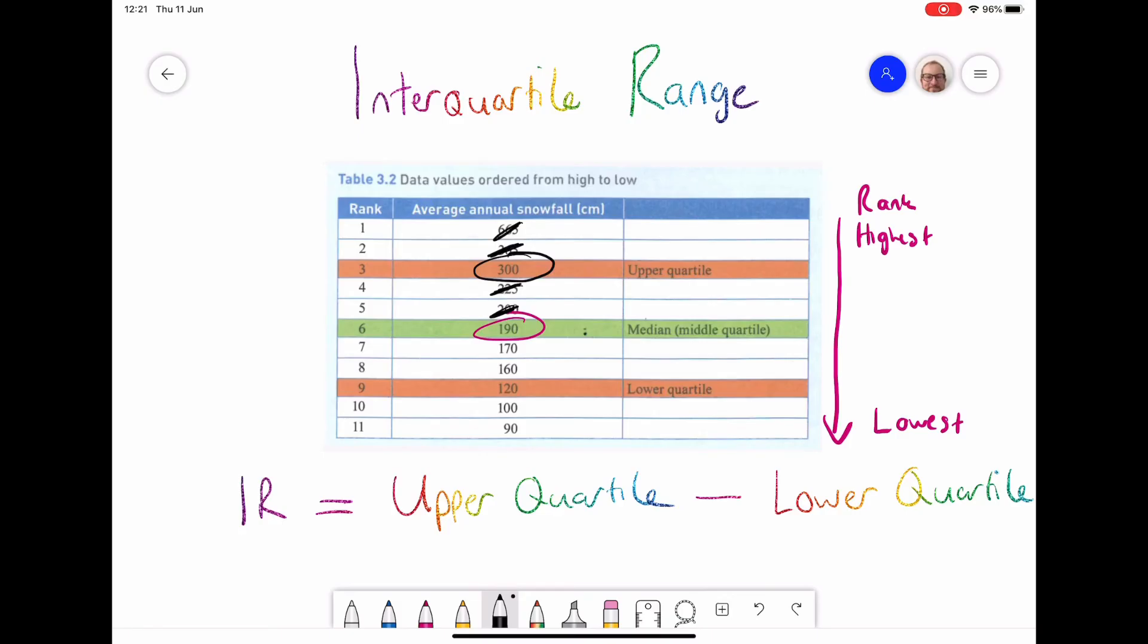If I want to find the lower quartile, I would do exactly the same. Again, I leave the median. I don't touch that one. I cross out this number, I cross out this number, until I go down and I get an isolated number. Therefore, if I follow my formula to get the interquartile range, my upper quartile is 300 and my lower quartile is 120, which means that my interquartile range is 180.